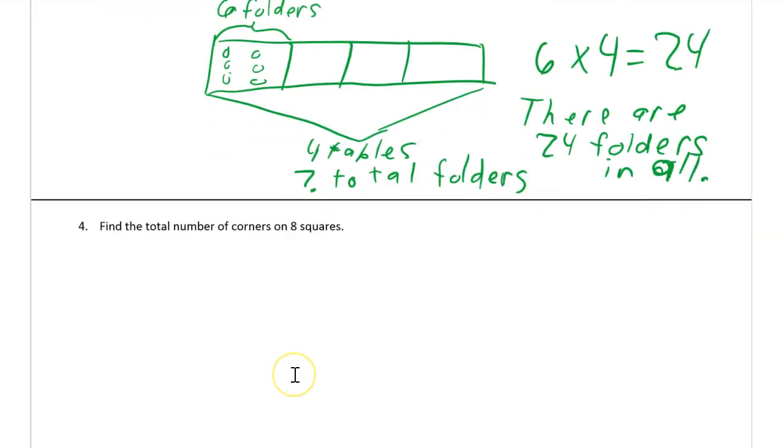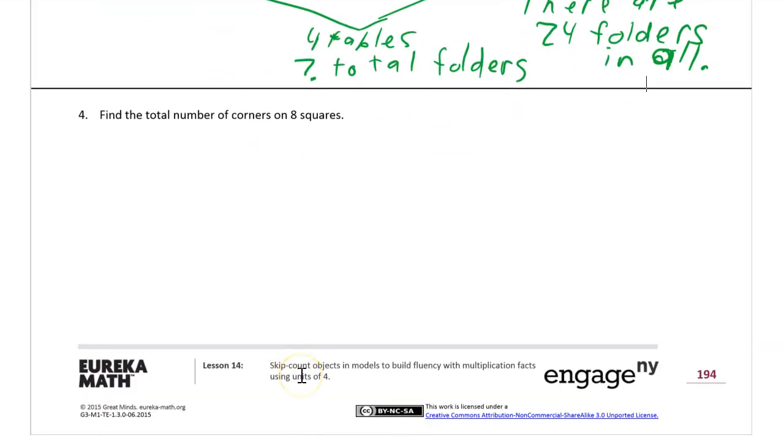And we've got one more left. Find the total number of corners on eight squares. Now you have to have some background knowledge to figure this out. You have to know that there are four corners on a square. And that's kind of not given to you - they only gave you one number, the number eight. Total number of corners on eight squares. So here's what we do - I'm going to draw a tape diagram for this. We have eight squares, right?